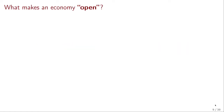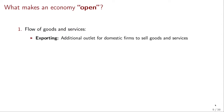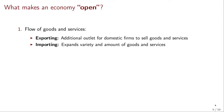The first question is: what makes an economy open? Two things. The first is there is going to be flow of goods and services between the economy we are modeling and the rest of the world. This comes in two flavors. The first is exporting — there is an additional outlet for domestic firms to sell goods and services. The converse is importing, which expands the variety and amount of goods and services that local consumers can purchase.